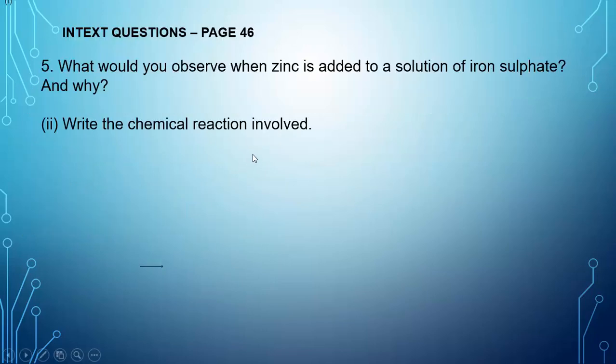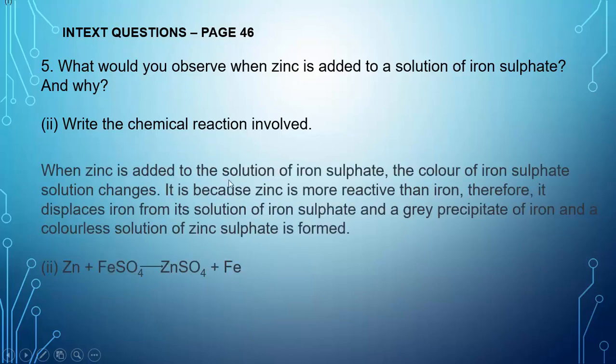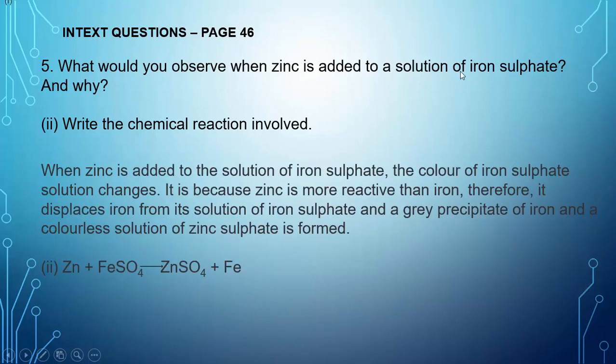Question number 5, what would you observe when zinc is added to a solution of iron sulfate and why? We know that zinc is more reactive than iron. Therefore displacement reaction will take place. So here the question is, what would you observe? So we know that iron sulfate is pale green in color. So when we add the zinc gray colored zinc powder into iron sulfate, what will happen? The green color of the solution will change into colorless and a gray precipitate of iron is formed in the solution. Zinc is gray color, iron sulfate was pale green in color. Now zinc sulfate does not have any color. Colorless iron gray colored precipitate formed. So hope you understood. We will continue in the next class.